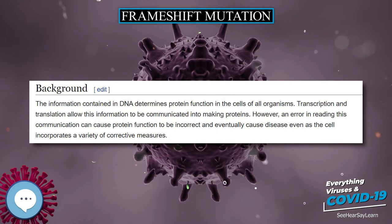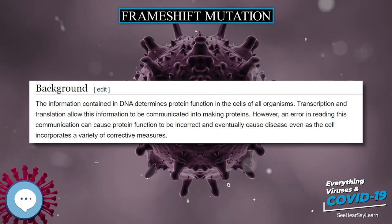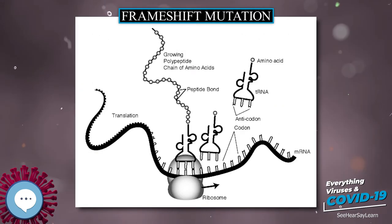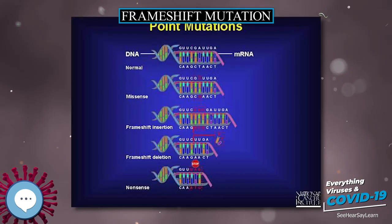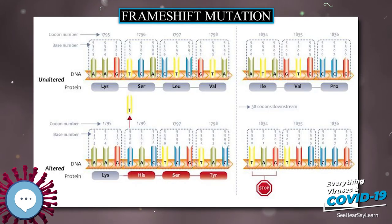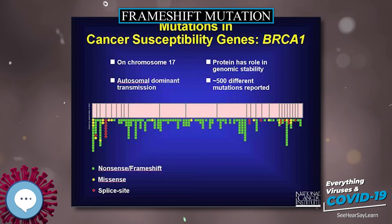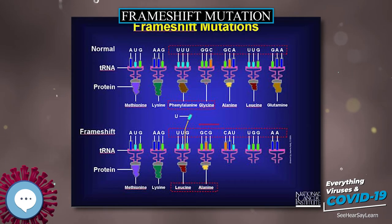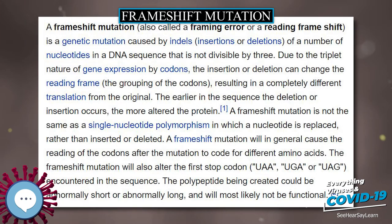Frameshift mutations are found to be more common in repeat regions of DNA because of slipping of the polymerase enzyme in those regions, allowing mutations to enter the sequence. Experiments can be run to determine the frequency of frameshift mutations by adding or removing a preset number of nucleotides. A team from Emory University looked at the difference in frequency by both adding and deleting a base pair; it was shown that there was no difference in frequency between the addition and deletion of a base pair, though there is a difference in the end result of the protein.